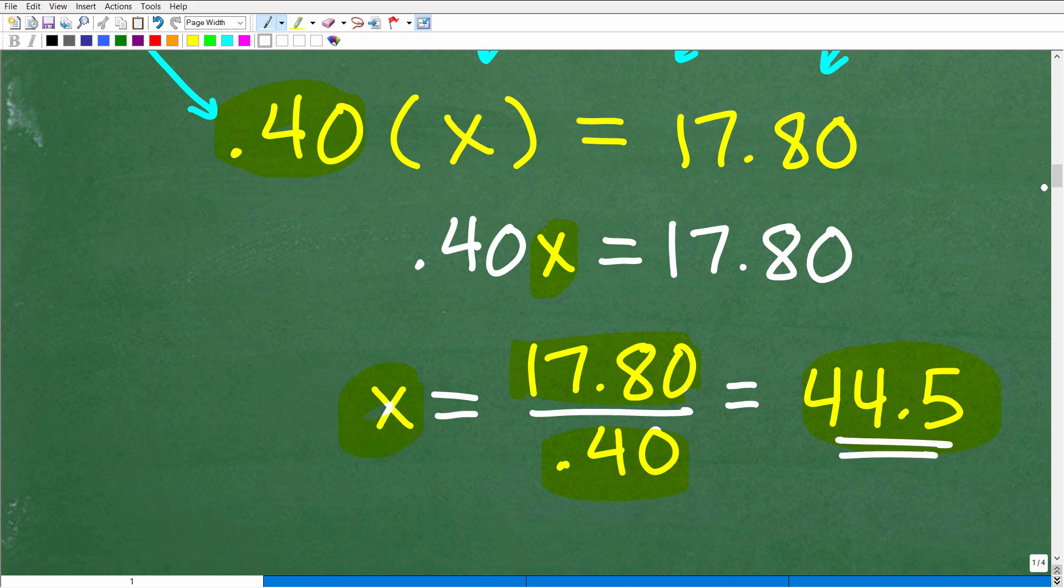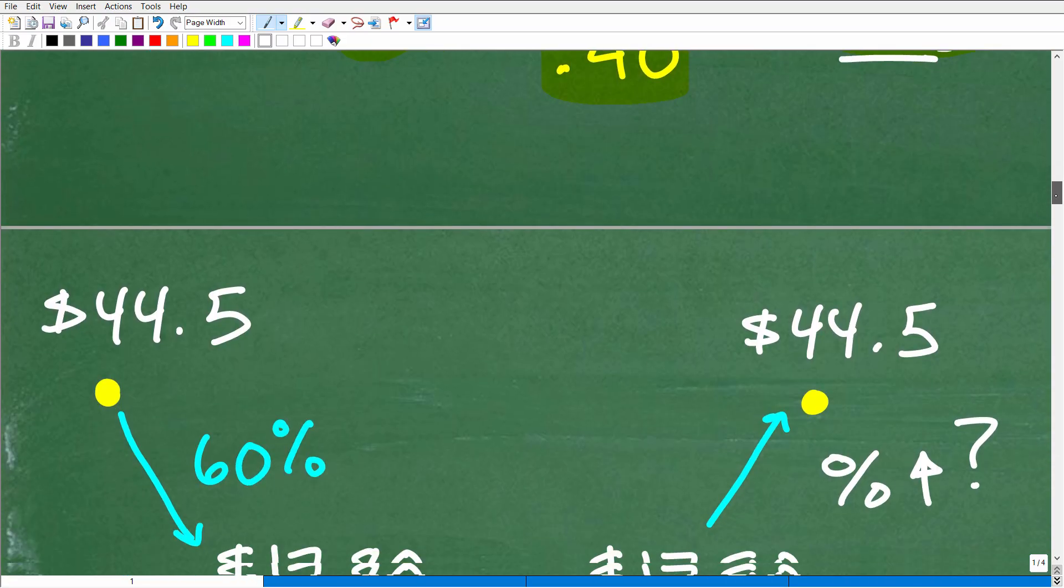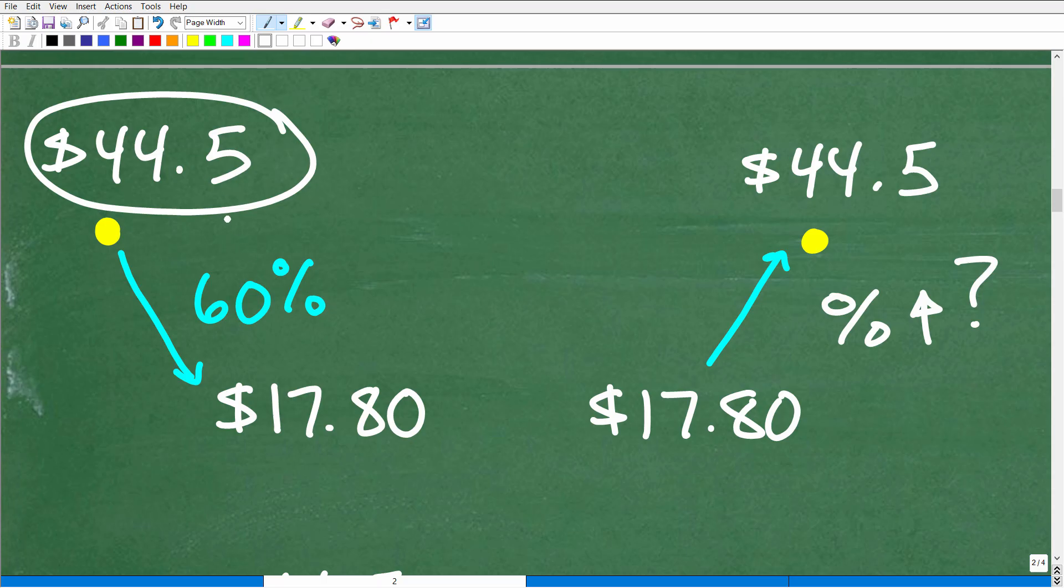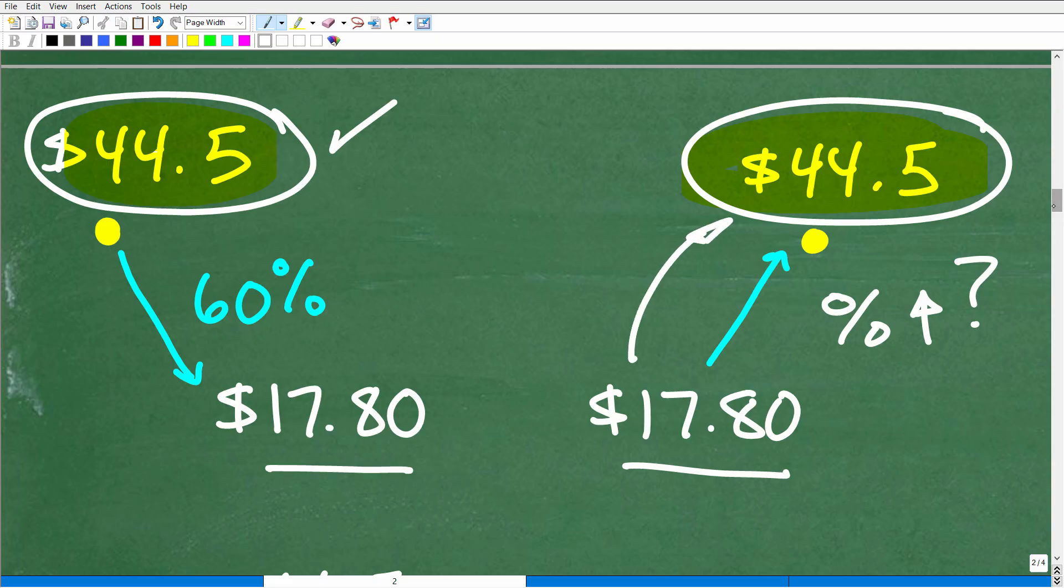What does that represent? That's the original amount. That's the actual stock price before it had an unfortunate fall of 60%. If you don't trust that number, just take 60% of 44.5 and subtract it away from 44.5, and you'll see it's 17.80. Or find 40% of 44.5, you'll see it's 17.80. Now this puts us in a real good position to figure out the rest of the problem.